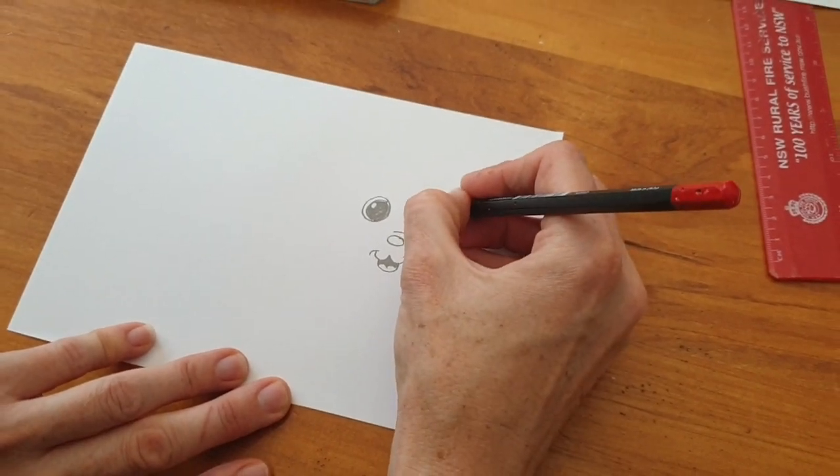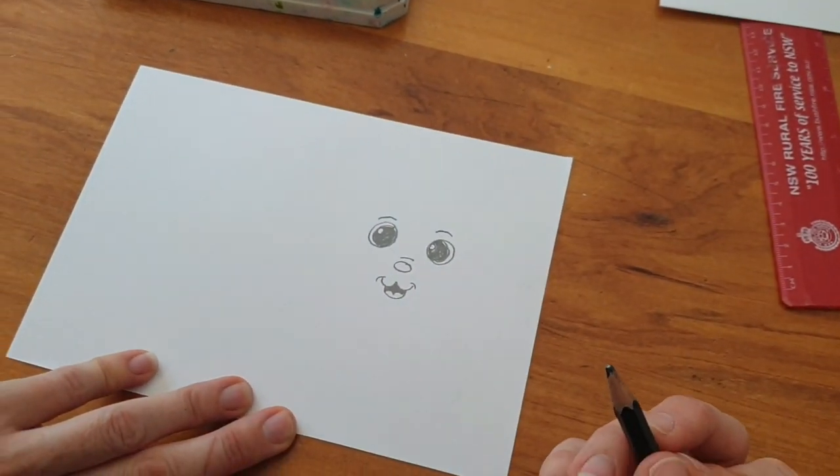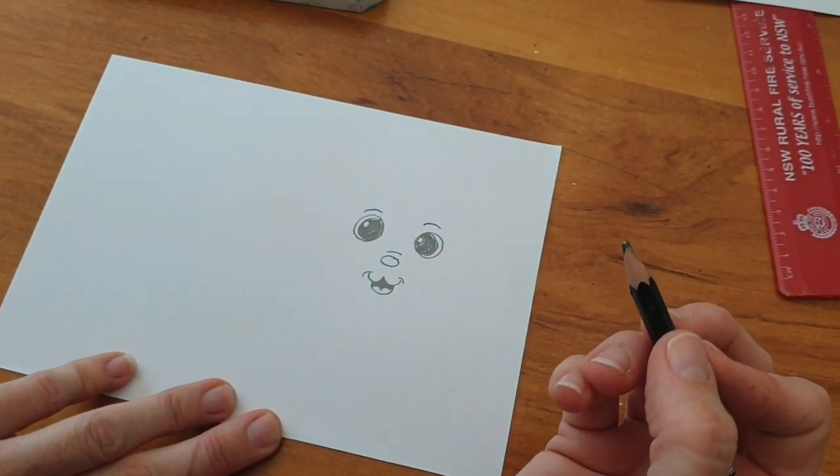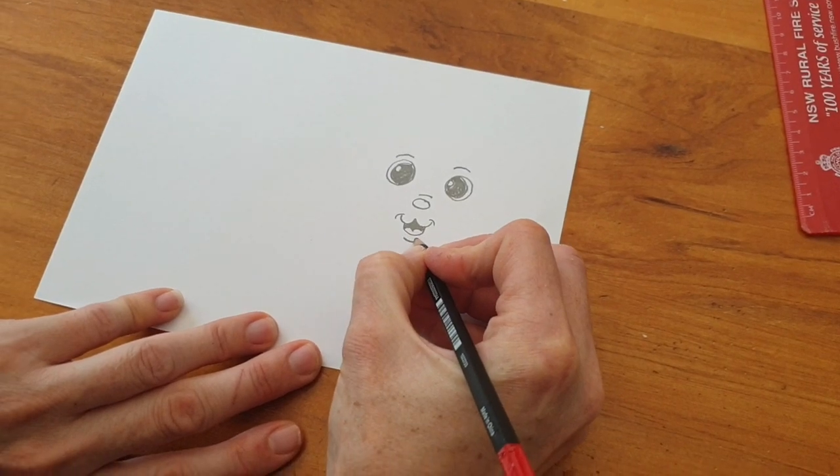Okay, I'm going to give your baby seal some eyebrows just to make it look real cute. And what are we going to do after that? So you're going to do a little line for your chin.